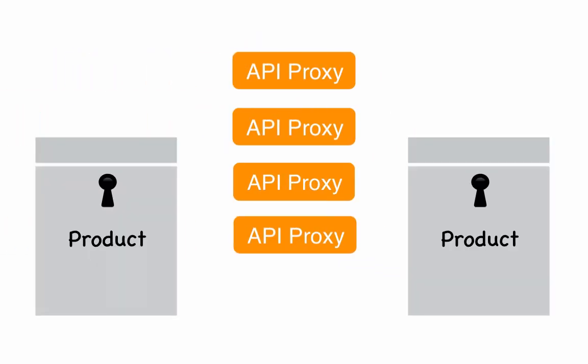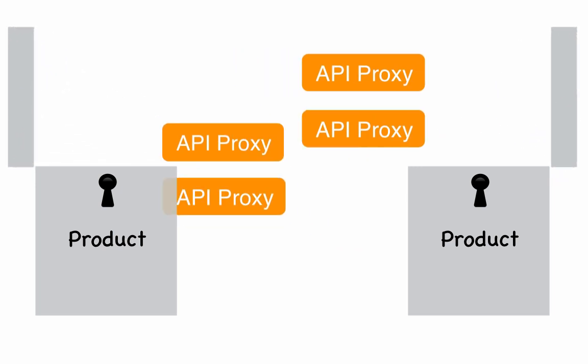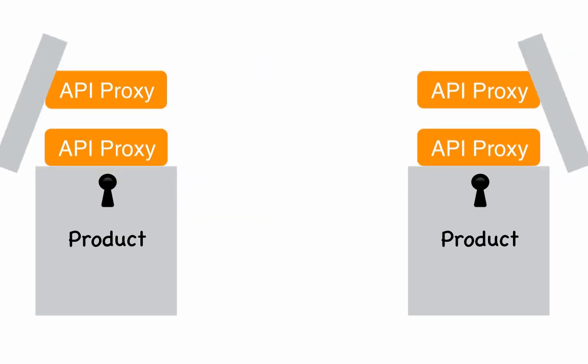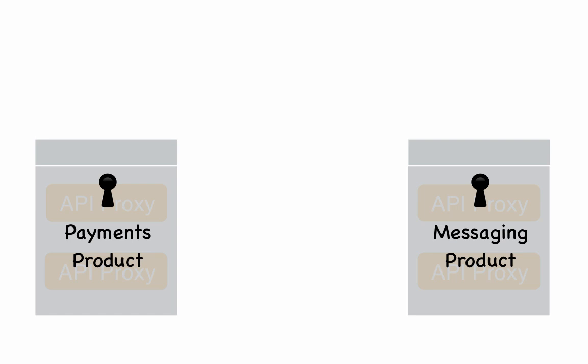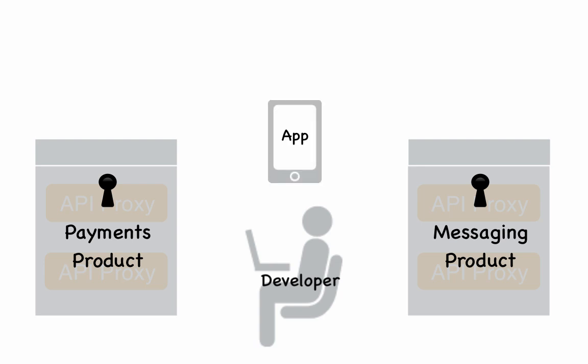Once you have a set of API proxies ready, you'll set up your API products, taking specific proxy resources and grouping them together into products to address specific needs and use cases for your developer community. You'll then register your app developers, which enables them to view your API offerings. Once registered, your app developers then register their apps with you so they can associate their apps with the API products that their apps will need to access.